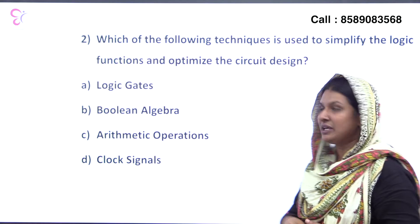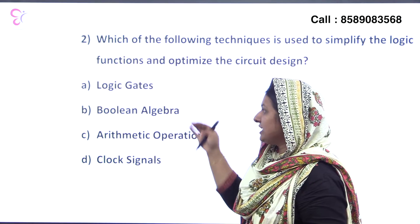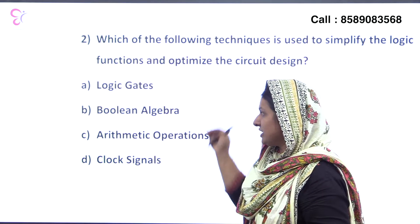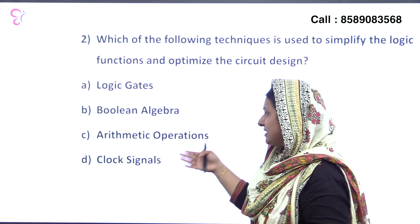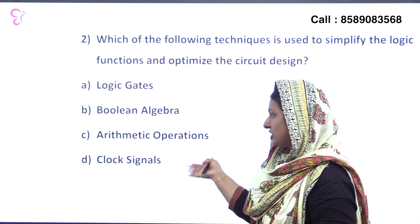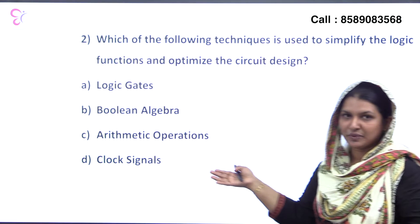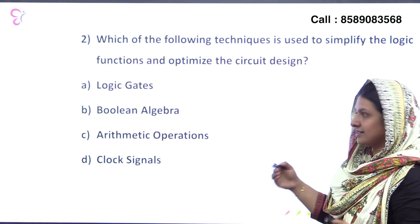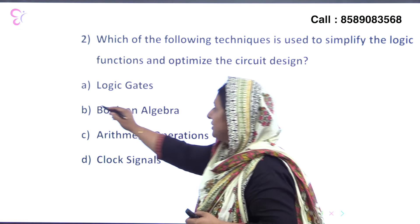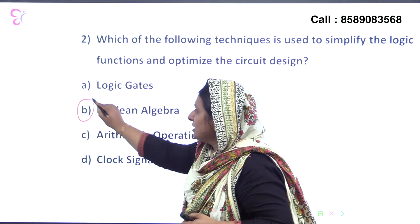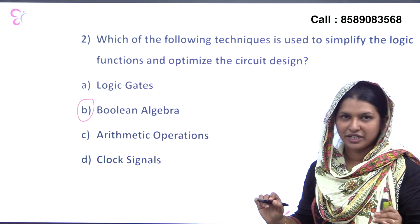Let's look at the options: Option A is Logic Gates, Option B is Boolean Algebra, Option C is Arithmetic Operations, Option D is Clock Signals. The answer is Option B — Boolean Algebra.